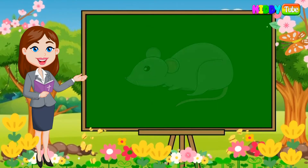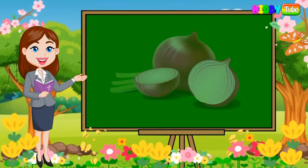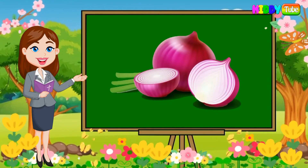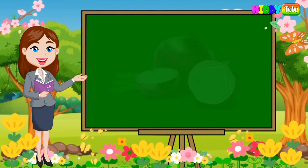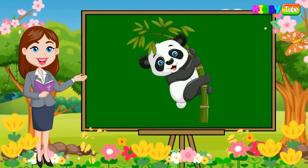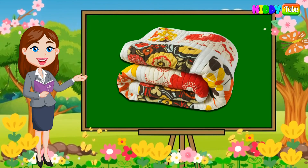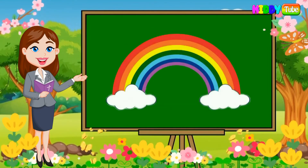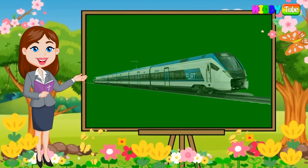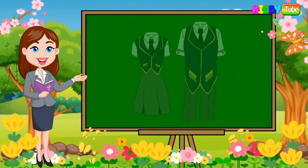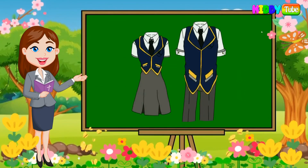N is for nurse, O is for onion, P is for panda, Q is for quilt, R is for rainbow, S is for stars, T is for train, U is for uniform.